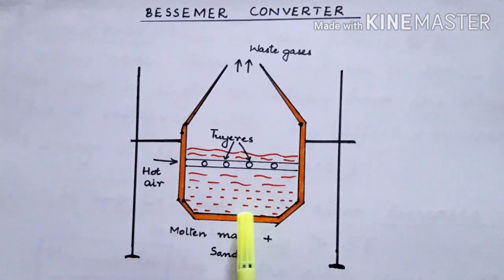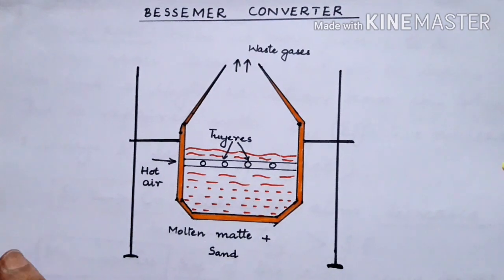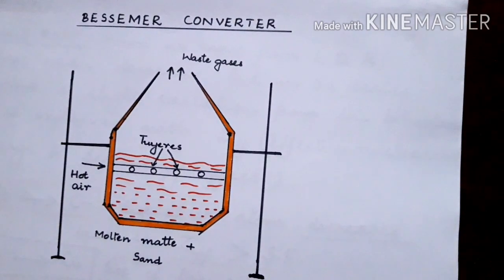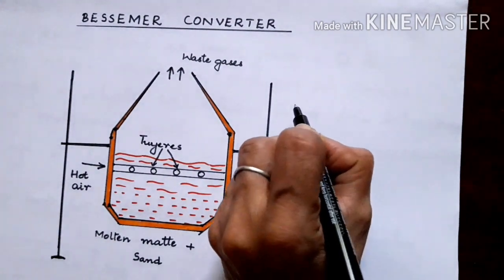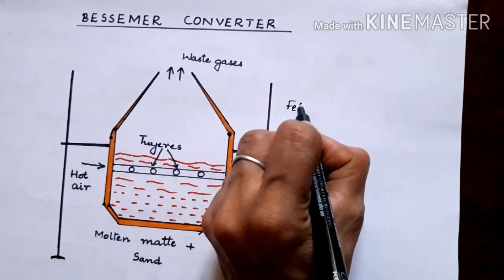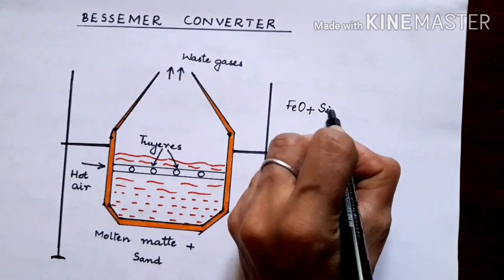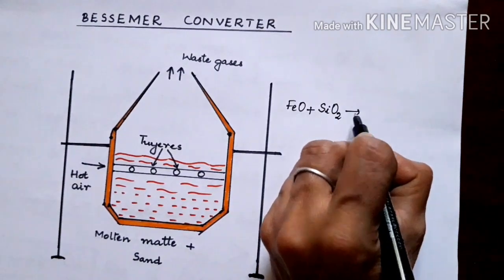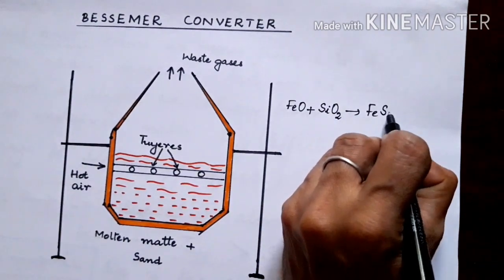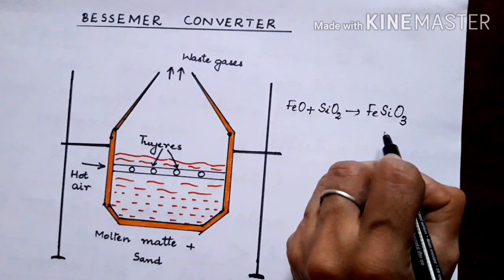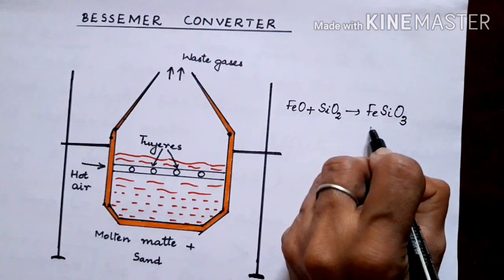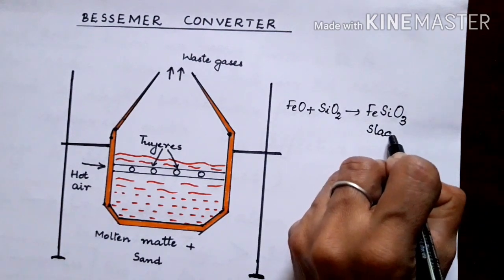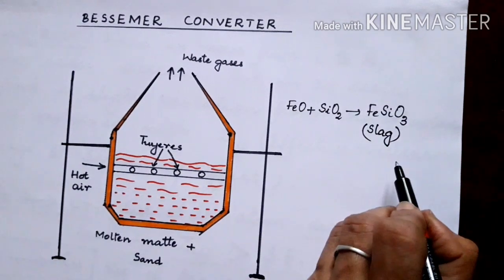So the reactions that are happening in the Bessemer Converter are FeO reacting with SiO2 to form FeSiO3. That is, iron silicate is formed and this is the slag that will be floating over the metal which can be tapped out.